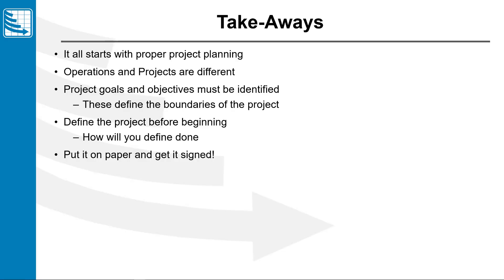So that completes lesson one. It all starts with proper project planning — we're not going to develop a schedule without doing some form of project management. We talked about the difference between operations and projects, and we've got to understand where the project is and how it's different. We introduced project goals and objectives, which define the boundaries of the project — all the work we do is within the confines of these goals and objectives. We also talked about defining what done is — we want everyone in agreement, and we want to put that on paper and get it signed, because this sets the structure of our project that we're going to schedule and manage.